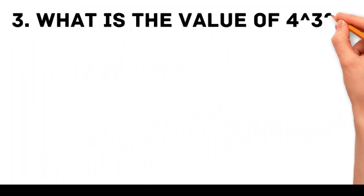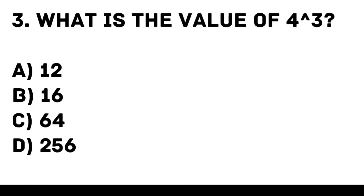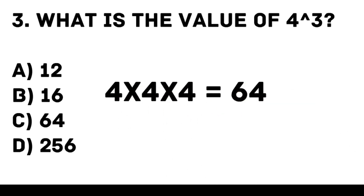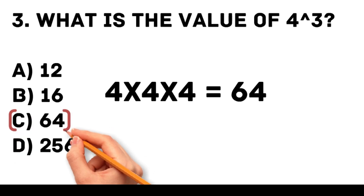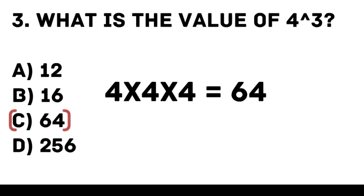Question 3. What is the value of 4 to the power of 3? A. 12. B. 16. C. 64. D. 256. Answer: C. 64. To find 4 to the power of 3, multiply 4 by itself 3 times. 4 times 4 times 4 is equal to 64.